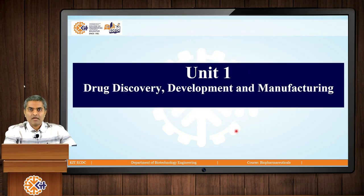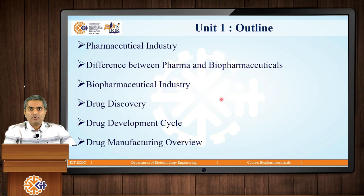This entire course contains 6 units. Let us commence with unit number 1. The title of the unit is Drug Discovery, Development and Manufacturing. This unit will cover the following lessons: pharmaceutical industry, difference between pharmaceuticals and biopharmaceuticals, biopharmaceutical industry, drug discovery, development cycle and manufacturing overview.